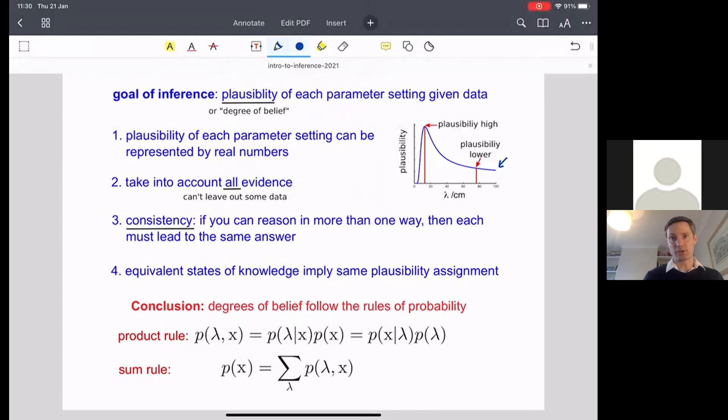The second axiom, again, seems hard to argue with, is that we should take into account all the evidence that we see. So if you're given a data set, you can't arbitrarily leave out parts of that data set. You just have to use all of the data set. And so I don't think that's something that really can be argued with as being an irrational axiom. It's guaranteed to be rock solid.